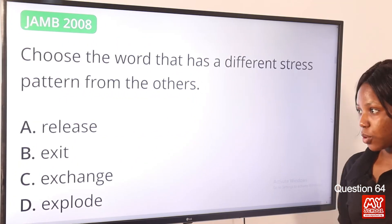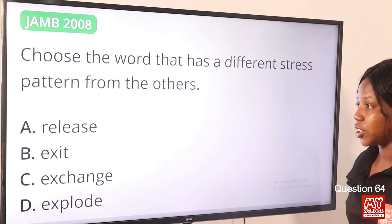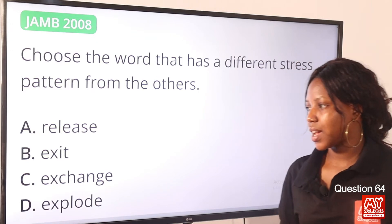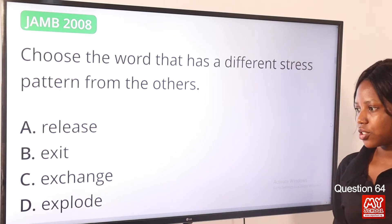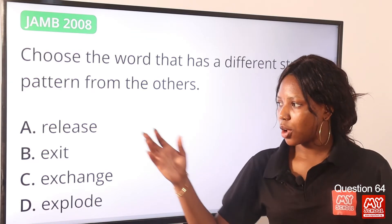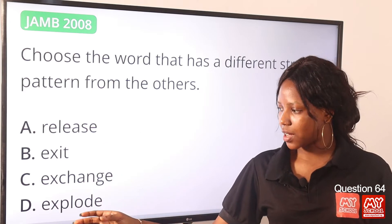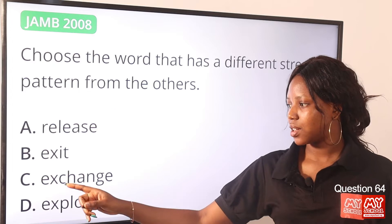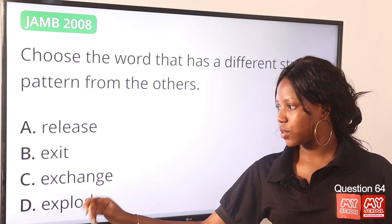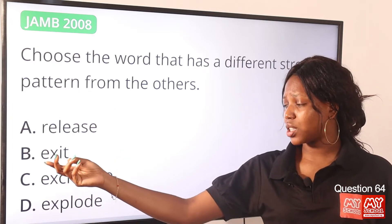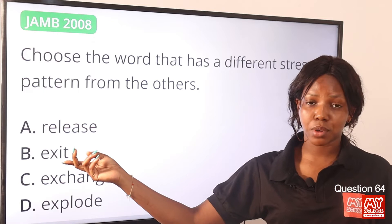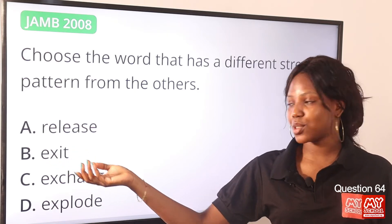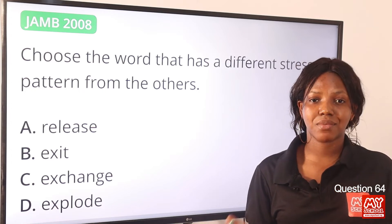Question 64. Choose the word that has a different stress pattern from the others. Option A: release. Option B: exit. Option C: exchange. Option D: explode. Options A, C, and D have the stress on the second syllable — release, exchange, explode. Except for option B, 'exit' is a monosyllabic word, stressed on the first syllable. So option B is the correct answer.